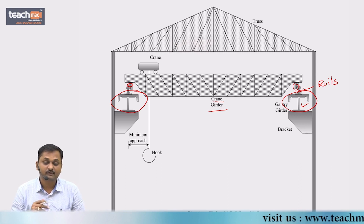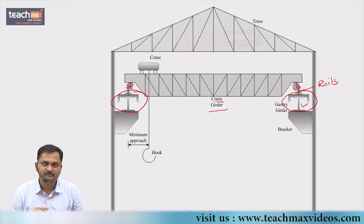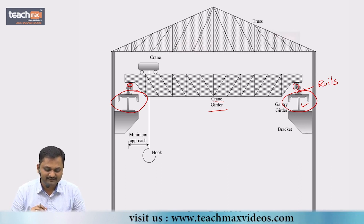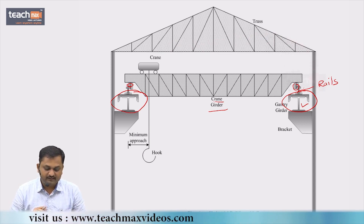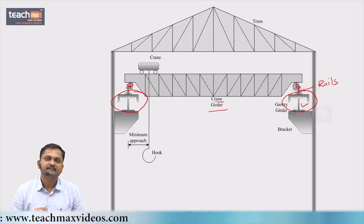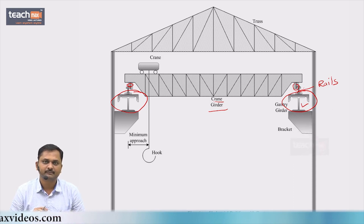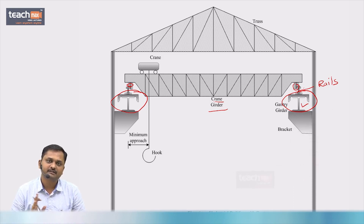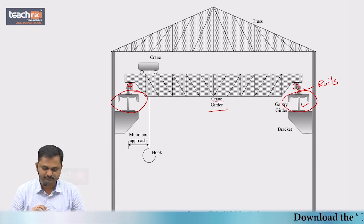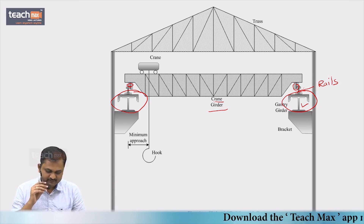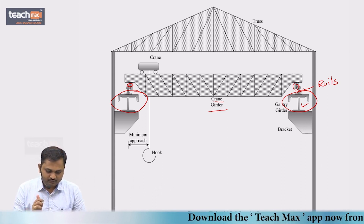The channel section is generally provided to restrain torsional buckling, so we design the gantry girder as a laterally supported beam. We assume the gantry girder is a simply supported beam — it is designed as a laterally supported, simply supported beam.